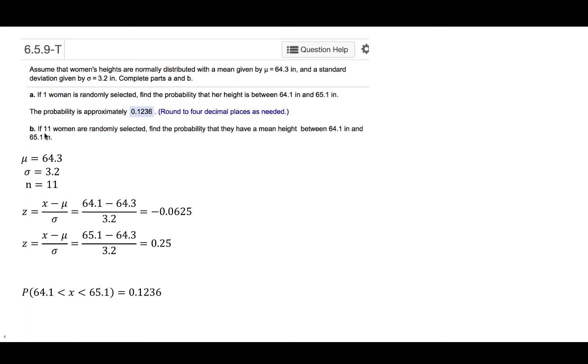In part B, we are asked to find the probability associated with a group of 11. So 11 women will be randomly selected, and then we are to find the probability that the sample mean for that sample would be between 64.1 and 65.1.